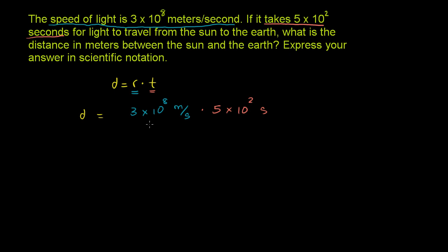Now, what's fun about scientific notation is that you can just rearrange the numbers you're taking the products, because that's just the property of multiplication. If everything's just being multiplied, order doesn't matter. And so we could rewrite this right here as 3 times 5 times 10 to the eighth times 10 squared.